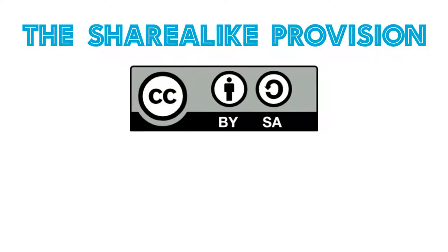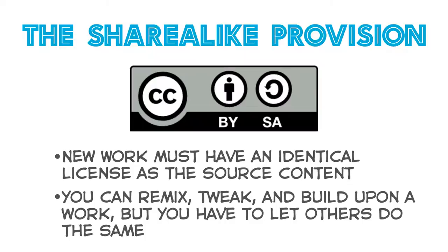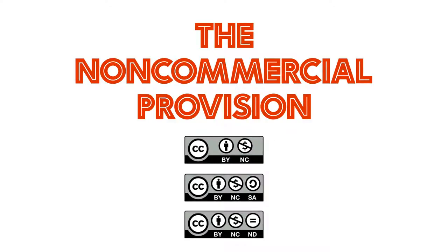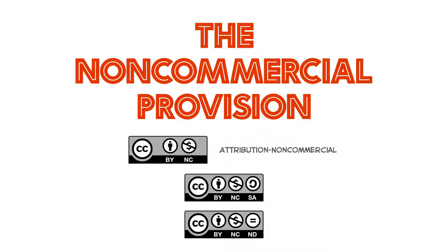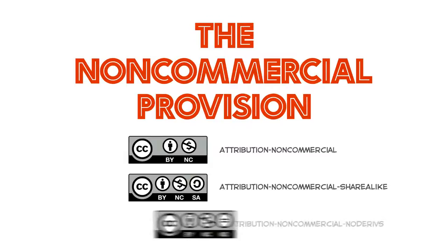With a Share Alike provision, your new work must have an identical license as the source content. In other words, this license lets others remix, tweak, and build upon a work, as long as they credit the creator and license their derivatives under identical terms. Finally, the Non-Commercial or NC provision makes the license compatible with any of the three licenses with an NC component: BY-NC itself, BY-NCSA, or even BY-NCND.